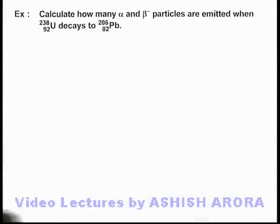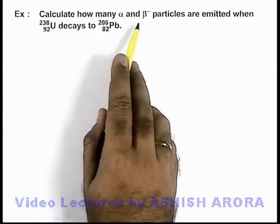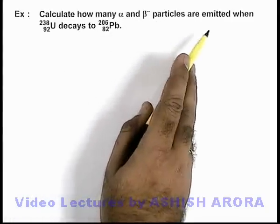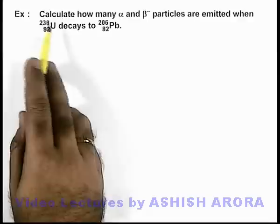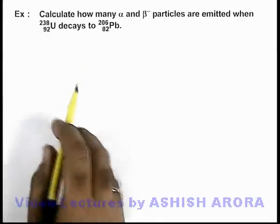In this example we are able to calculate how many alpha and beta minus particles are emitted when uranium 238 decays to lead 206.